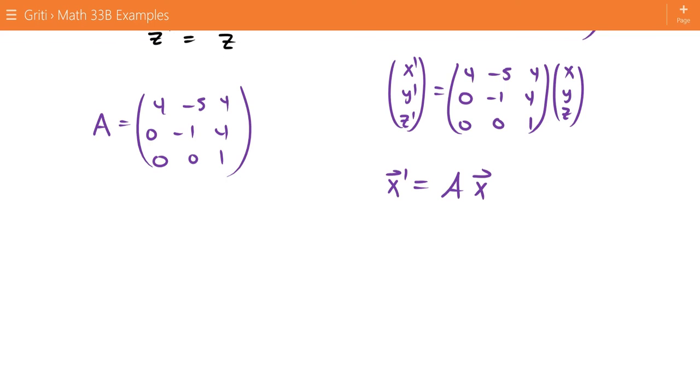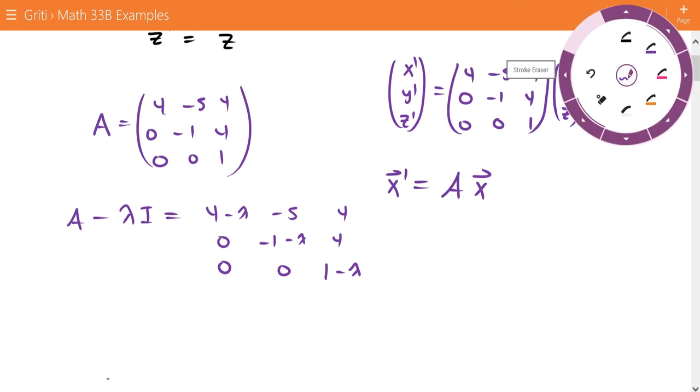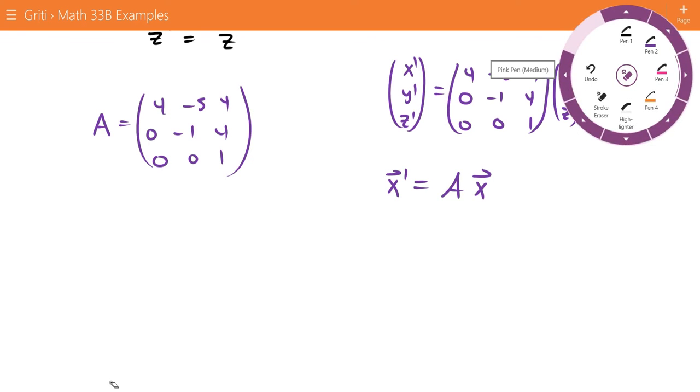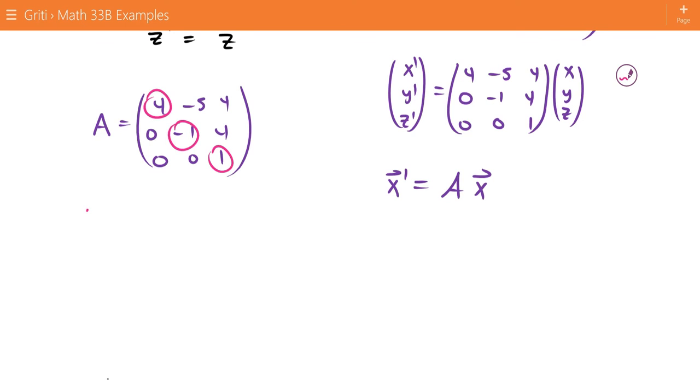First step, as usual, is to find the eigenvalues. So we look at A minus lambda I, that's 4 minus lambda, negative 5, 4, 0, negative 1 minus lambda, 4, 0, 0, 1 minus lambda. And actually, we don't even need to do that, because we have what's called an upper triangular matrix. All the entries below the diagonal are 0. So we know the eigenvalues are just the diagonal entries: 4, negative 1, and 1. So lambda equals 4, negative 1, and 1.